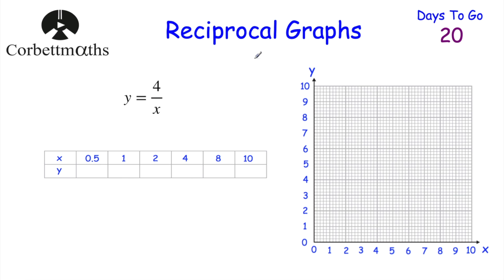Let's start by looking at reciprocal graphs. We've got a reciprocal graph - we know it's reciprocal because we've got x on the denominator. We've got y equals 4 over x. I would like you to draw this reciprocal graph - work out the y coordinates and plot it.